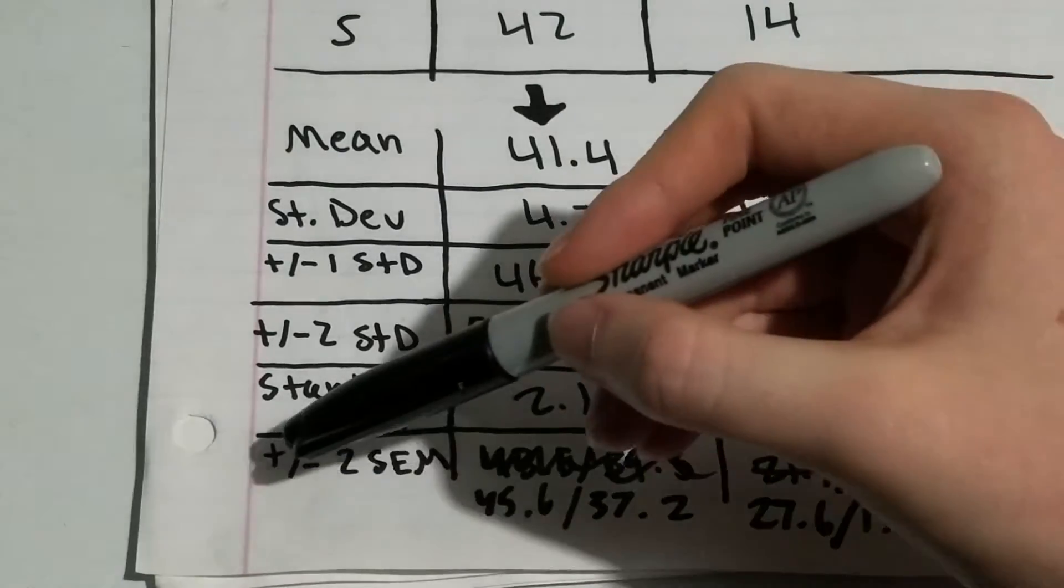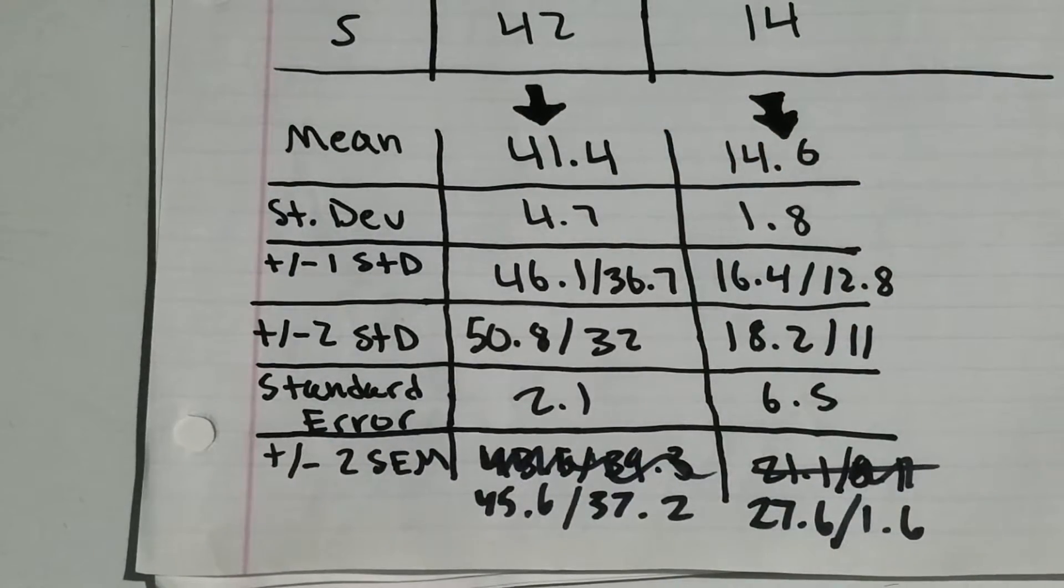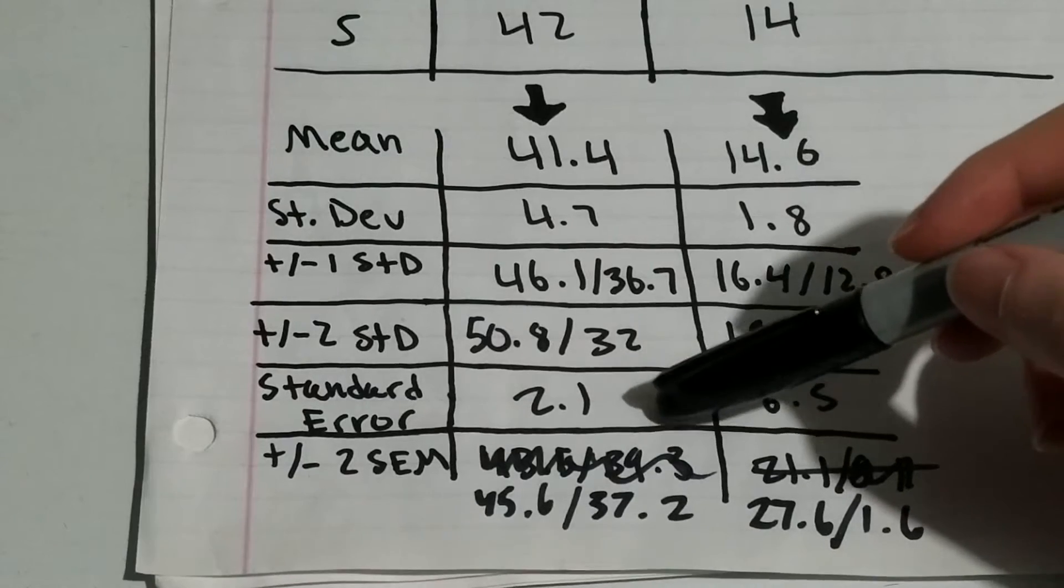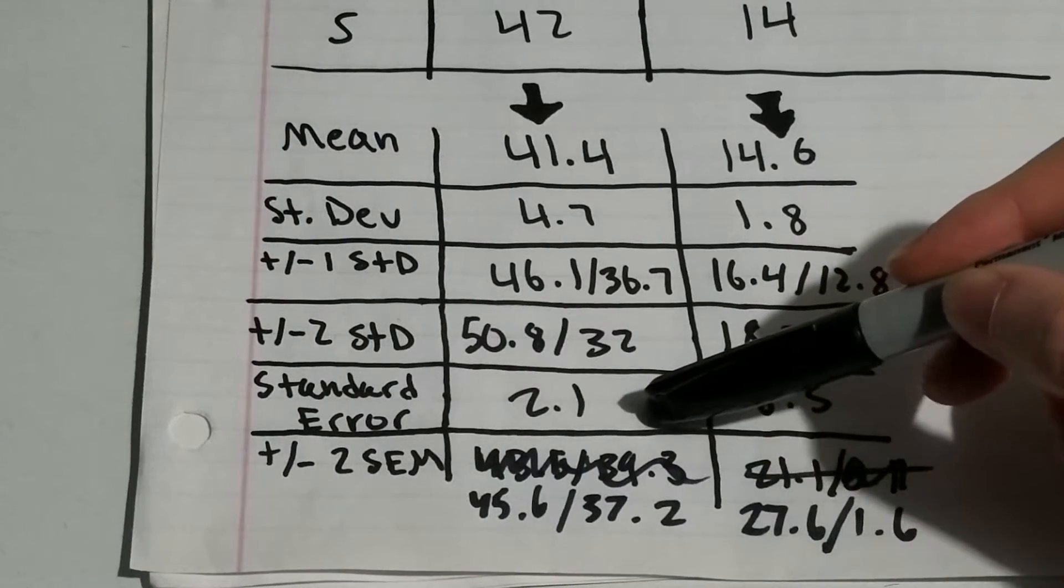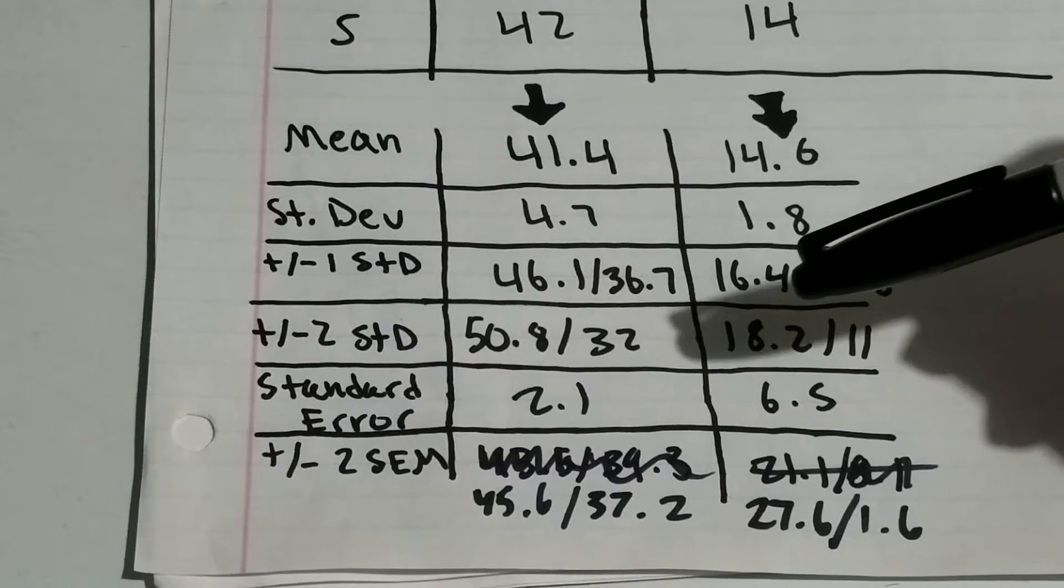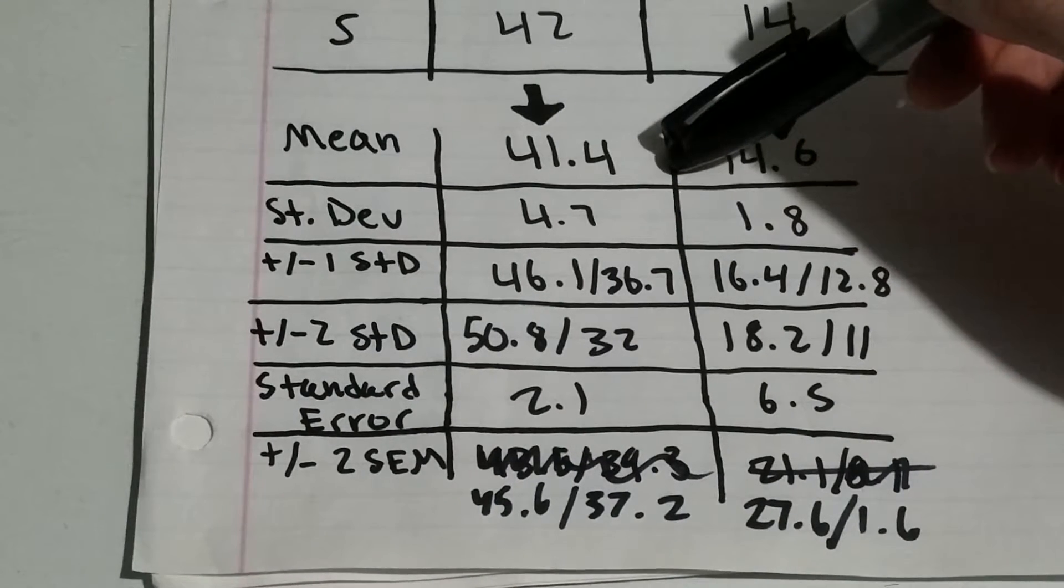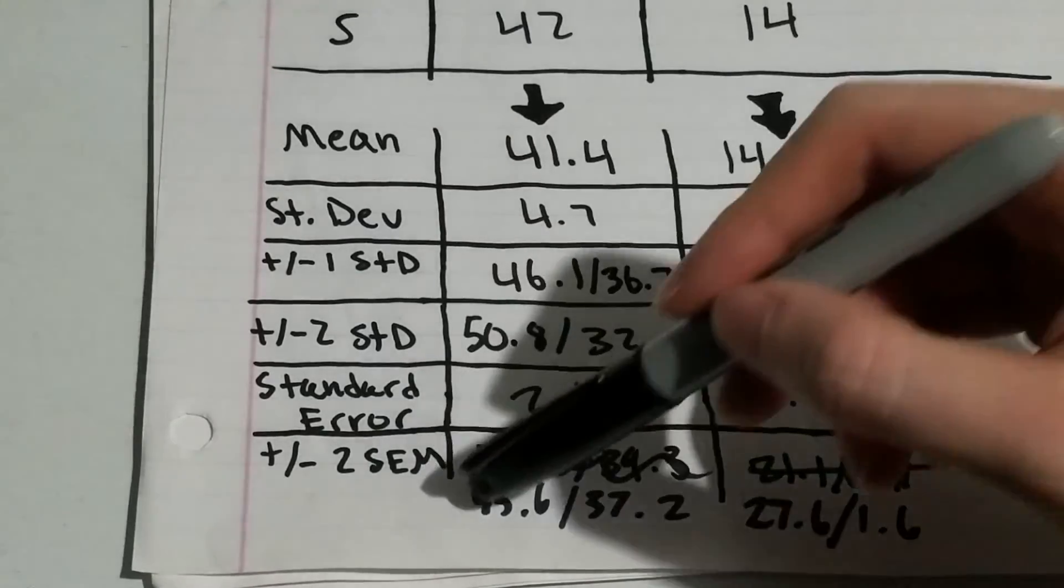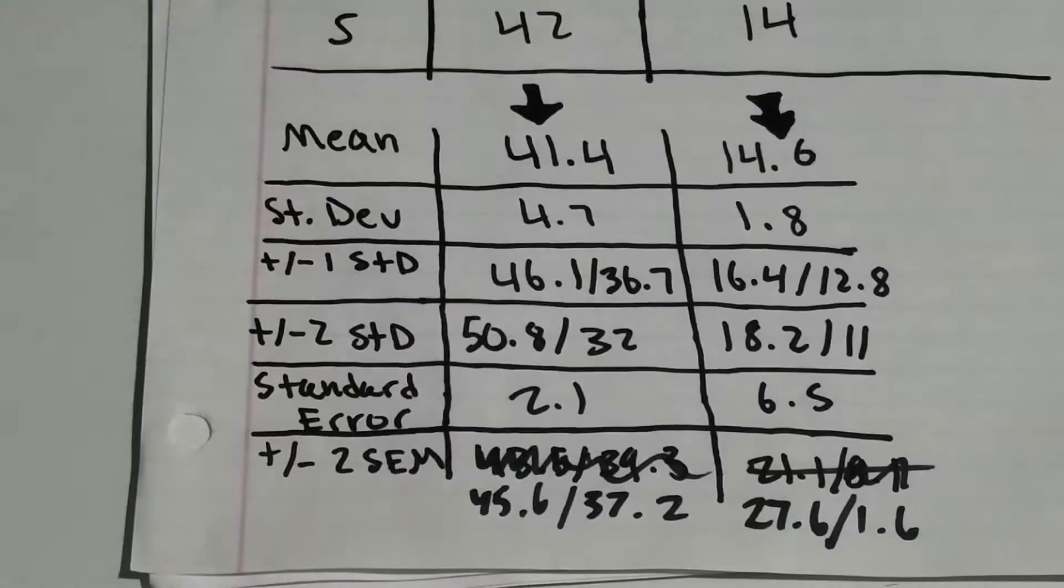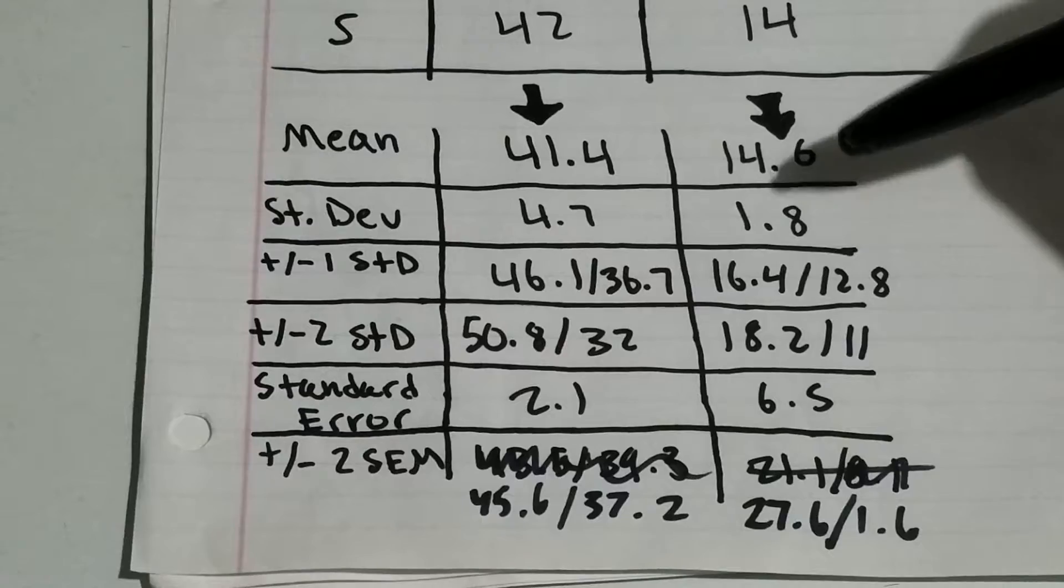And then to find your plus and minus 2 SEM, what you want to do is take your standard error and times it by 2. Once you get that, you're going to want to add it to your mean and then subtract it from your mean to get the first two points. And then you repeat for your next set of data.